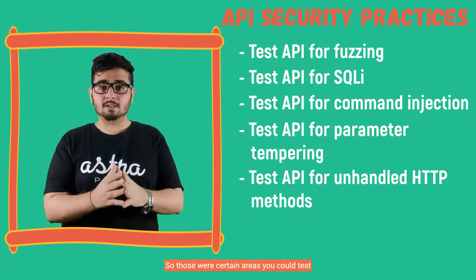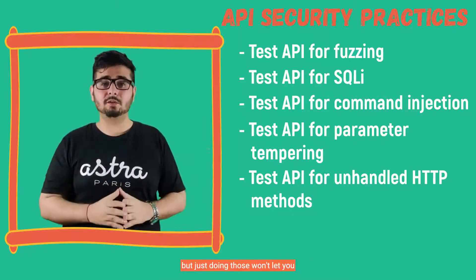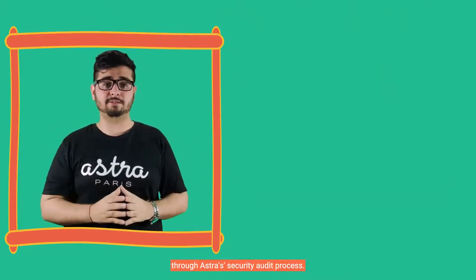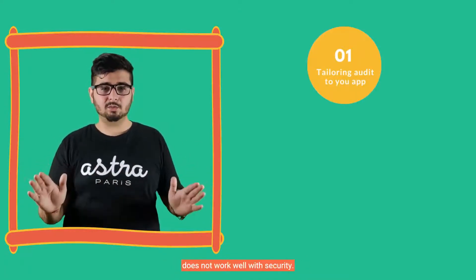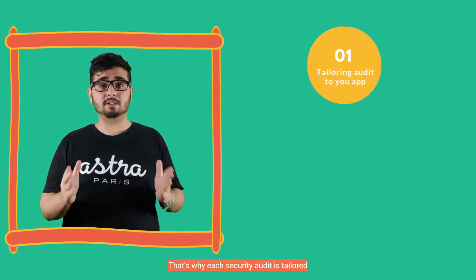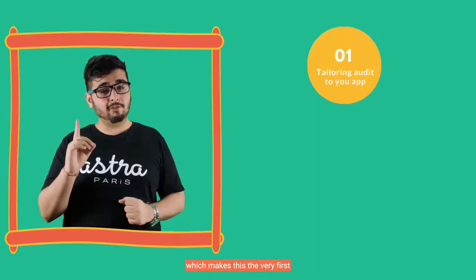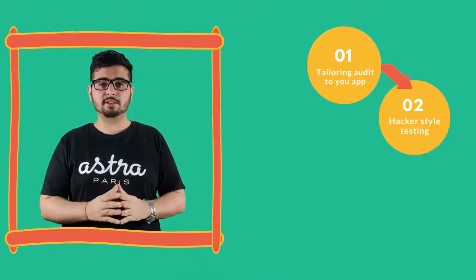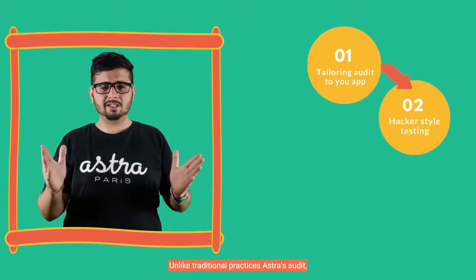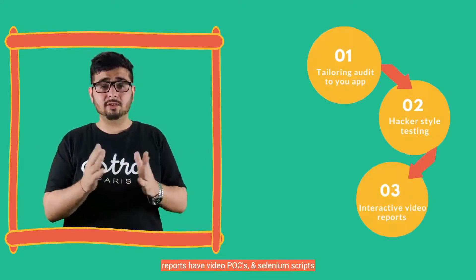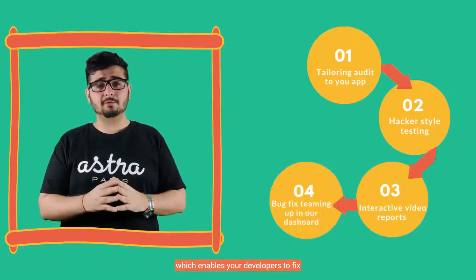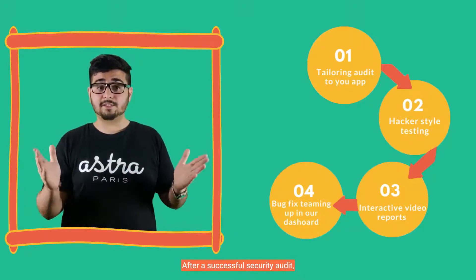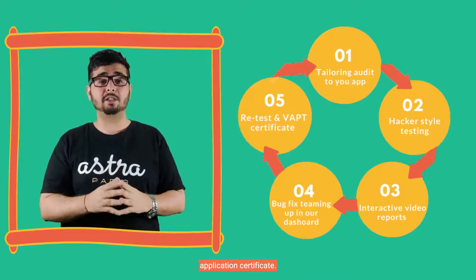Those were certain areas you could test your APIs for security, but just doing those won't let you conduct a comprehensive security audit. In another minute, I'll walk you through Astra's security audit process. We believe one size fits all does not work well with security — that's why each security audit is tailored to your application's technology stack, which makes this the very first step in our process. We perform hacker-style security testing to uncover all possible vulnerabilities. Unlike traditional practices, Astra's audit reports have video POCs and Selenium scripts which enable your developers to fix vulnerabilities in record time by collaborating with our engineers within our VAPT dashboard. After a successful security audit, your business is awarded with a safe application certificate.